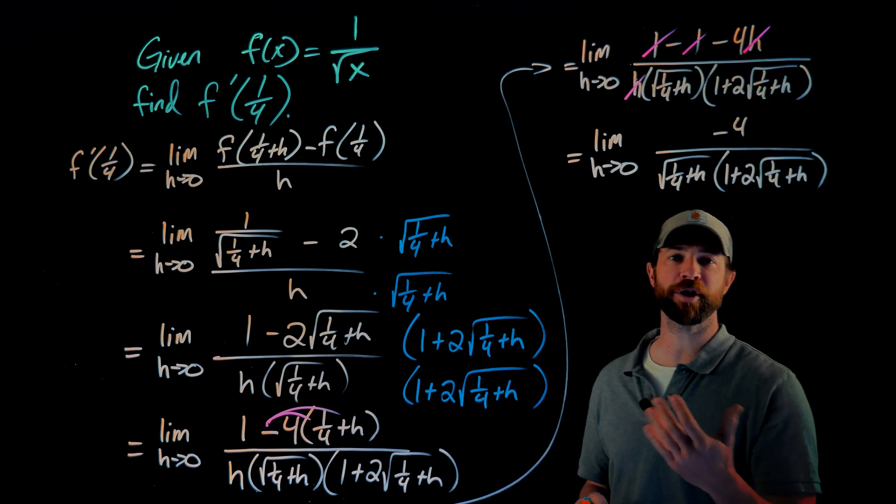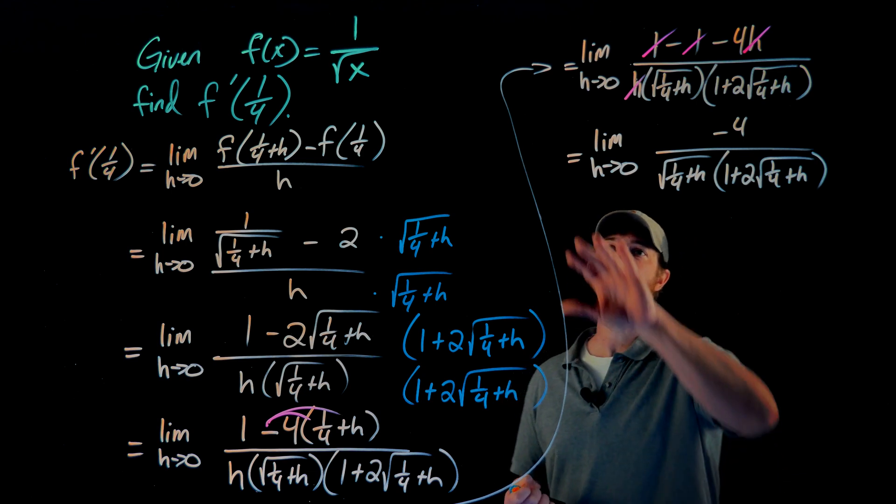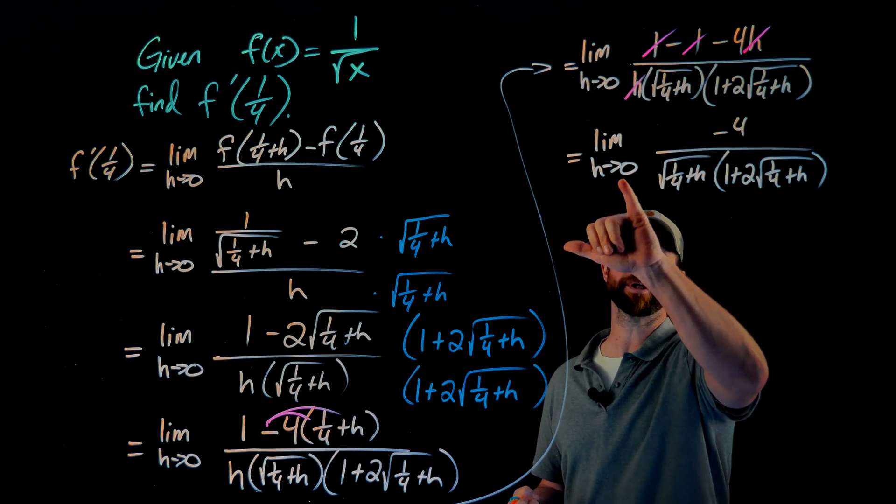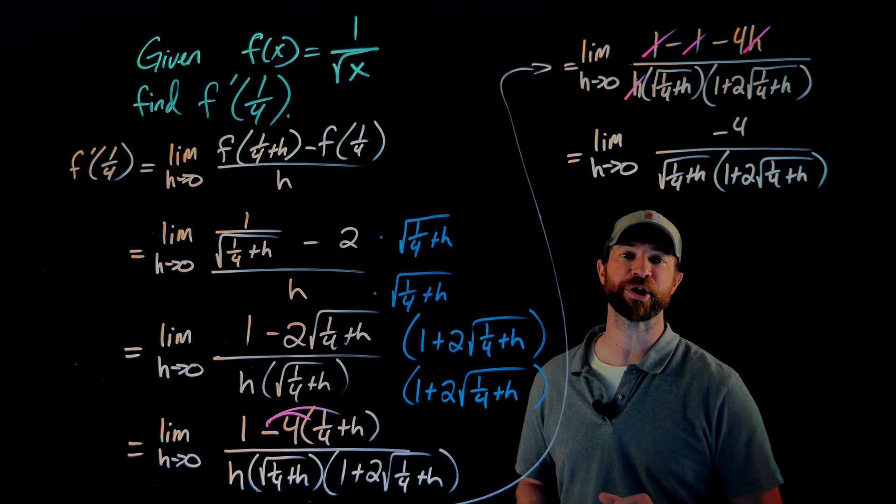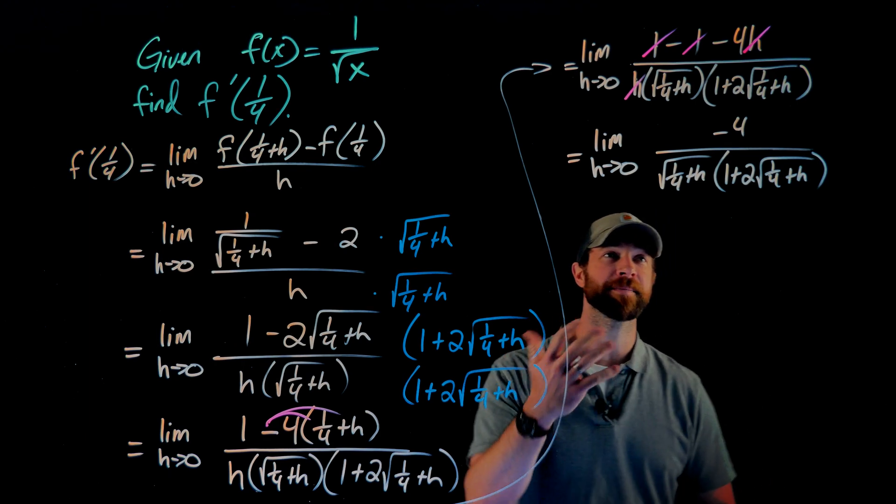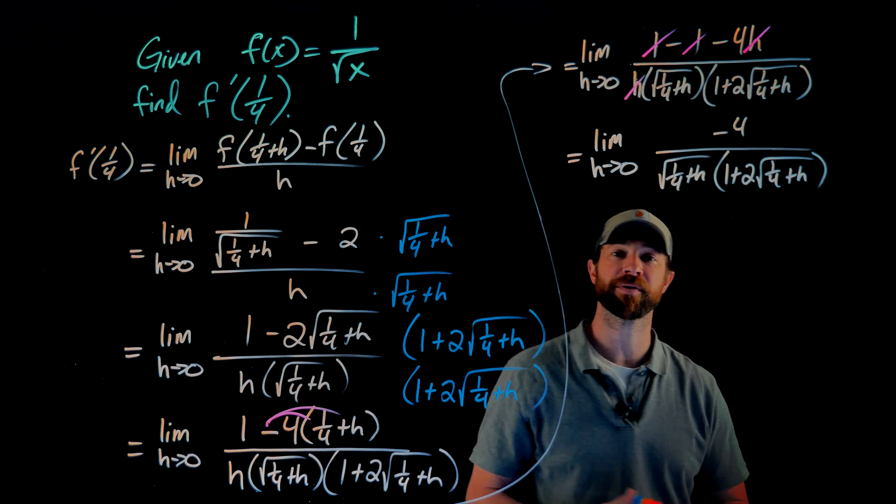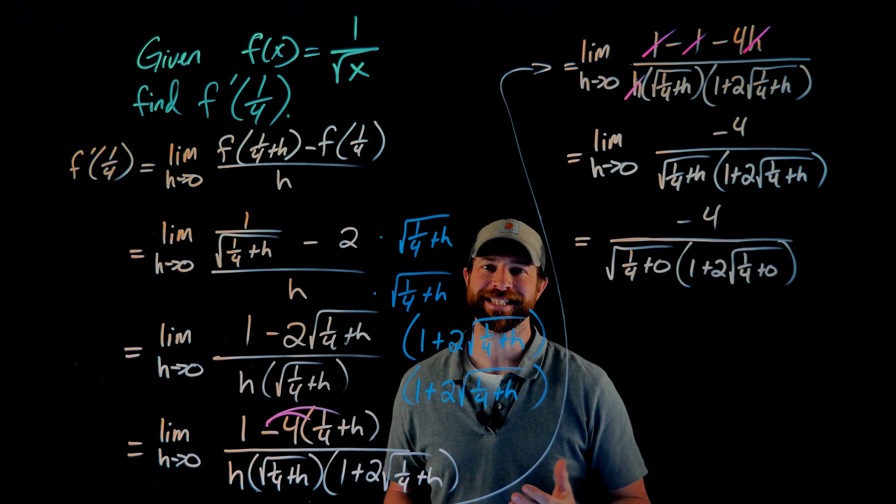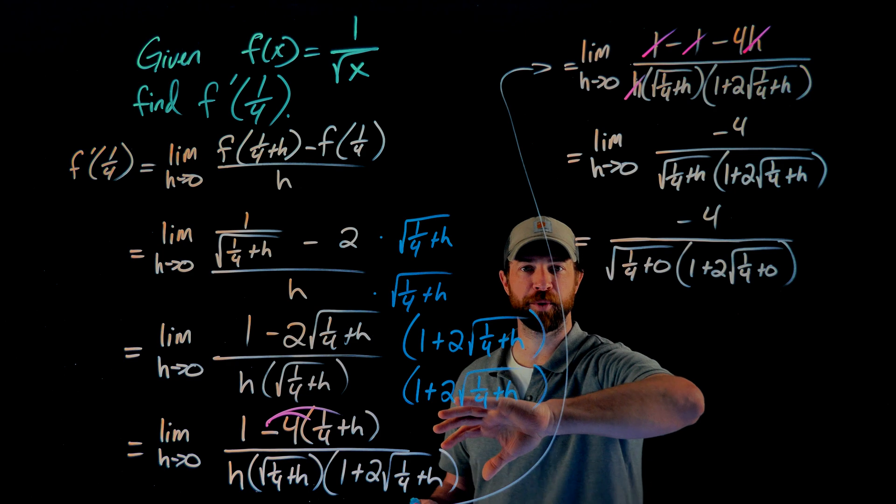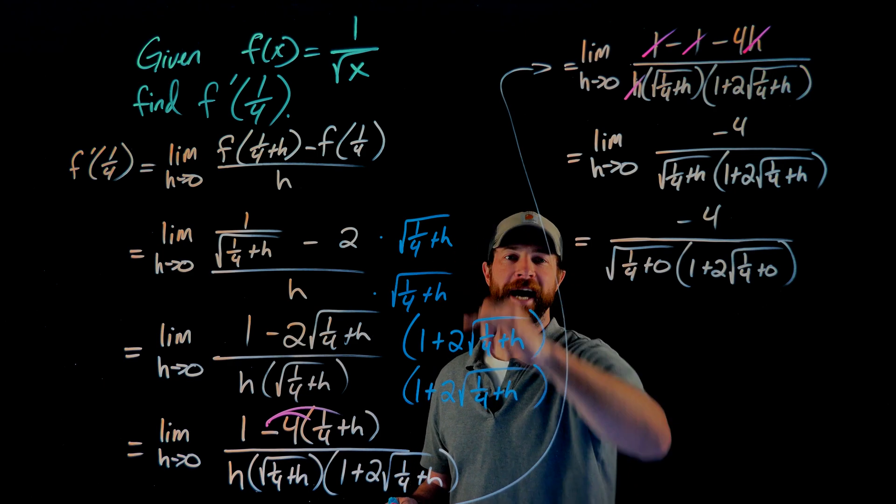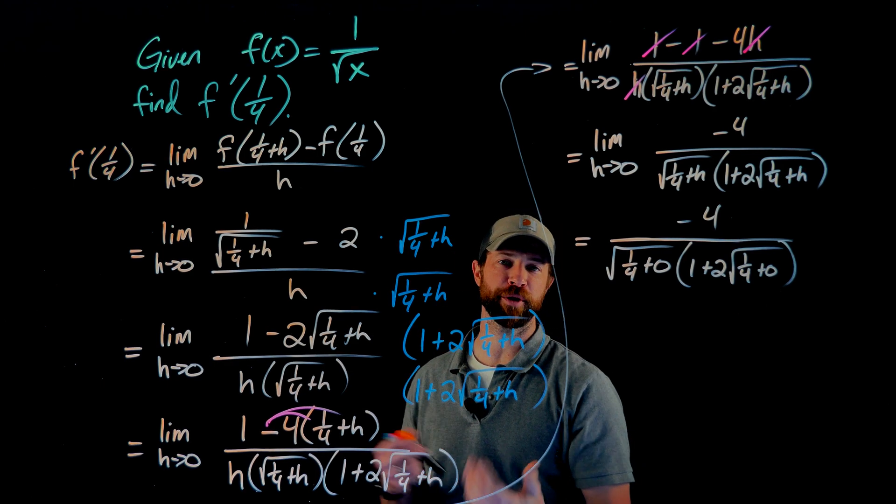And now, as long as my denominator doesn't go to zero, I can evaluate this limit simply by plugging in h equals zero into this equation. And I can see right here, especially because there's no subtractions of any sort, plugging in to zero will be just fine. We've done most of the steps. This was the tough algebra right here, was to clear the fractions and then take care of the square roots with the conjugate.